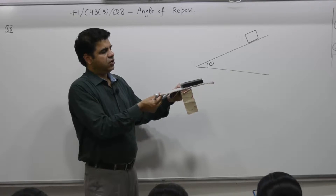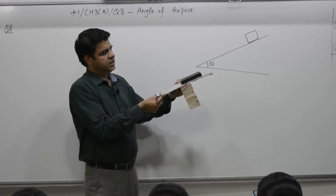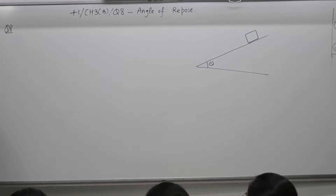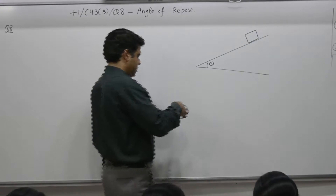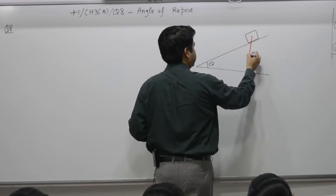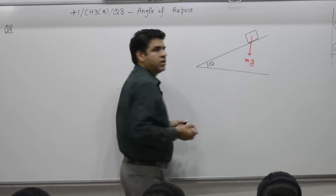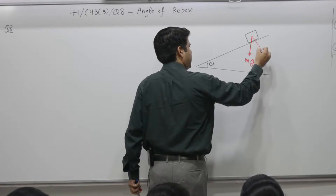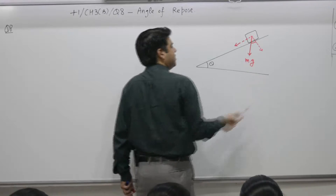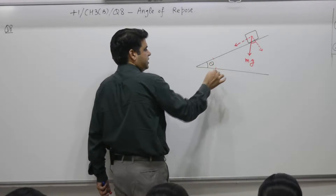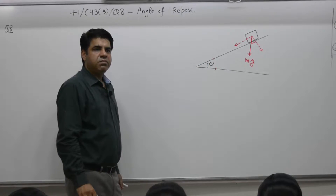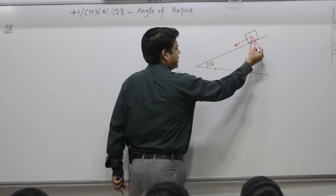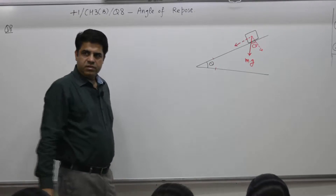There is a sort of competition. As I increase the angle, some parameter is increasing. The moment it slides, the supporting force and opposing force become equal. The weight of the object is mg downwards. The component of mg along the inclined surface and perpendicular to it — the angle between two lines is the same as the angle between their perpendiculars. So if this angle is theta, this angle is also theta.